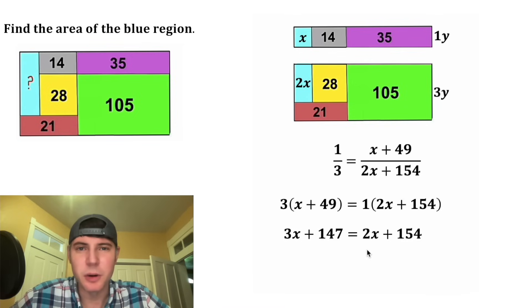Now we have an x on both sides of the equation. Let's get all the x's to one side. We can do that by subtracting 2x from both sides of the equation. After we do this, we'll have an x on this side, so let's get rid of this 147 by subtracting 147 from both sides. These two 147s will cancel each other out, and these two 2x's will cancel each other out. We end up with 3x minus 2x is equal to x, and 154 minus 147 is 7. x is equal to 7.